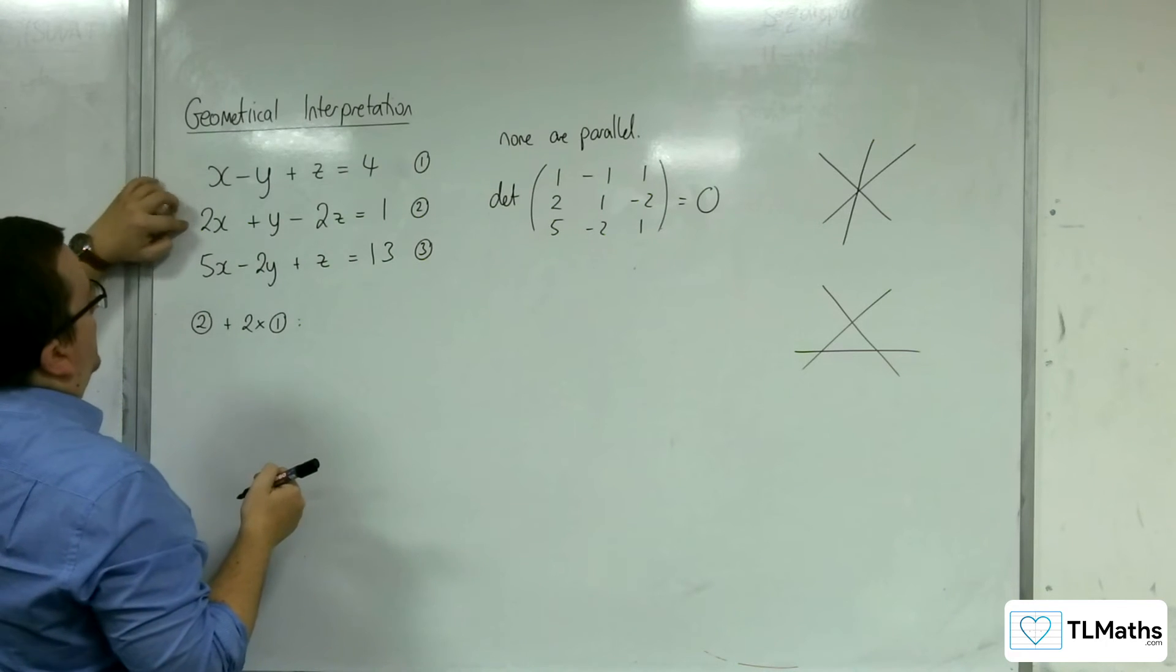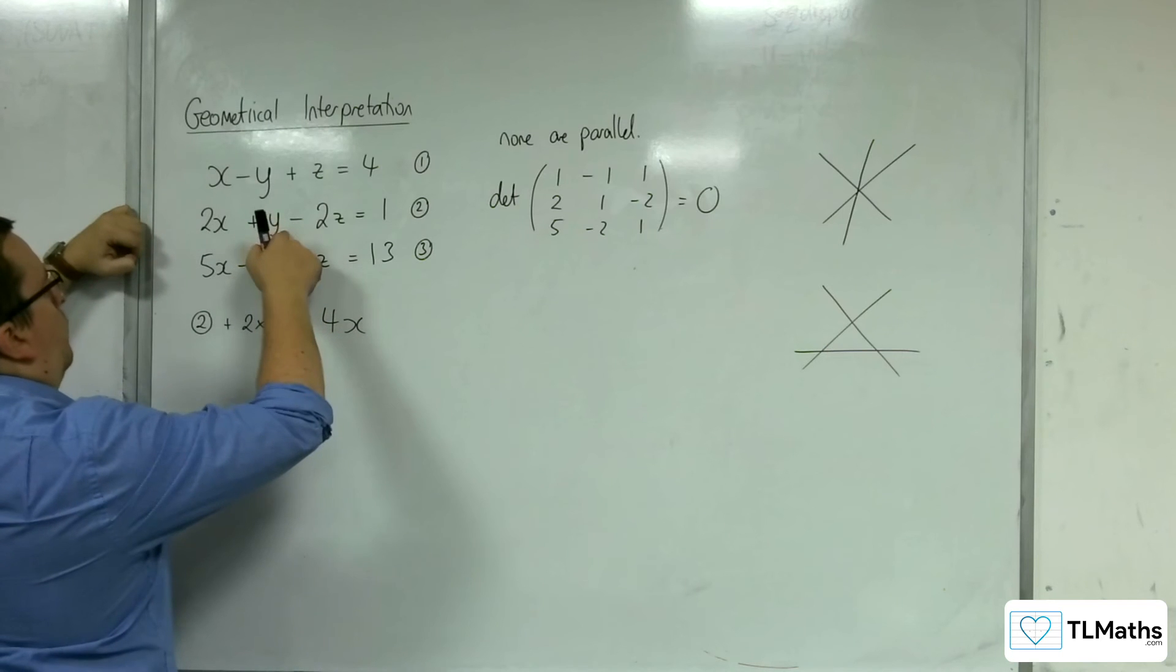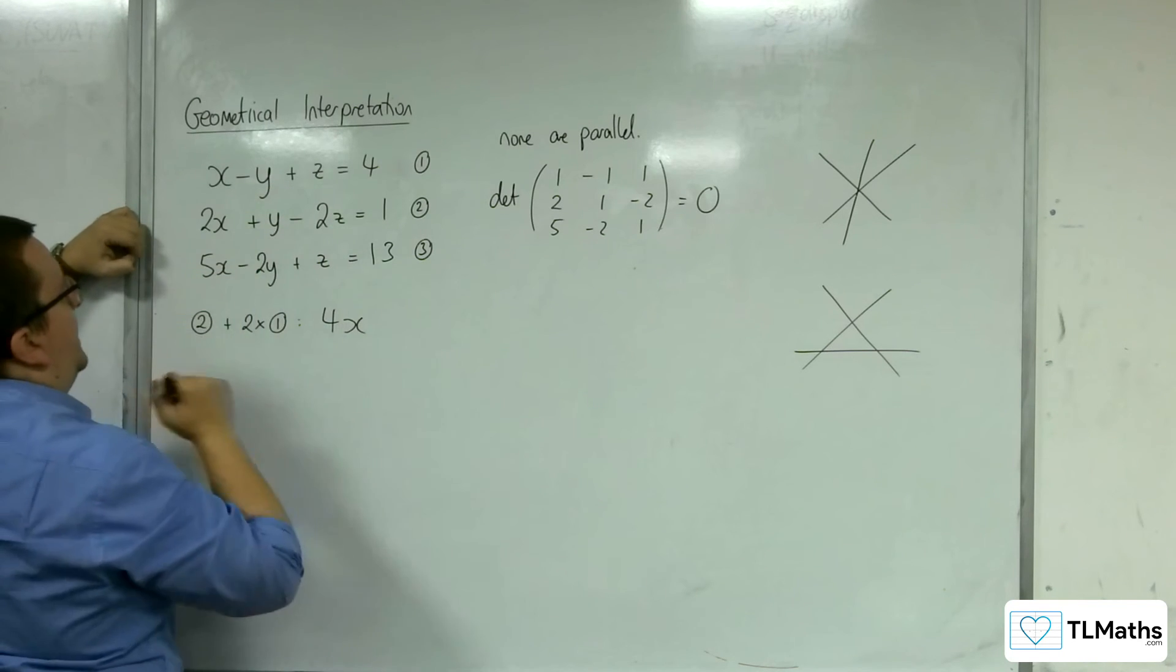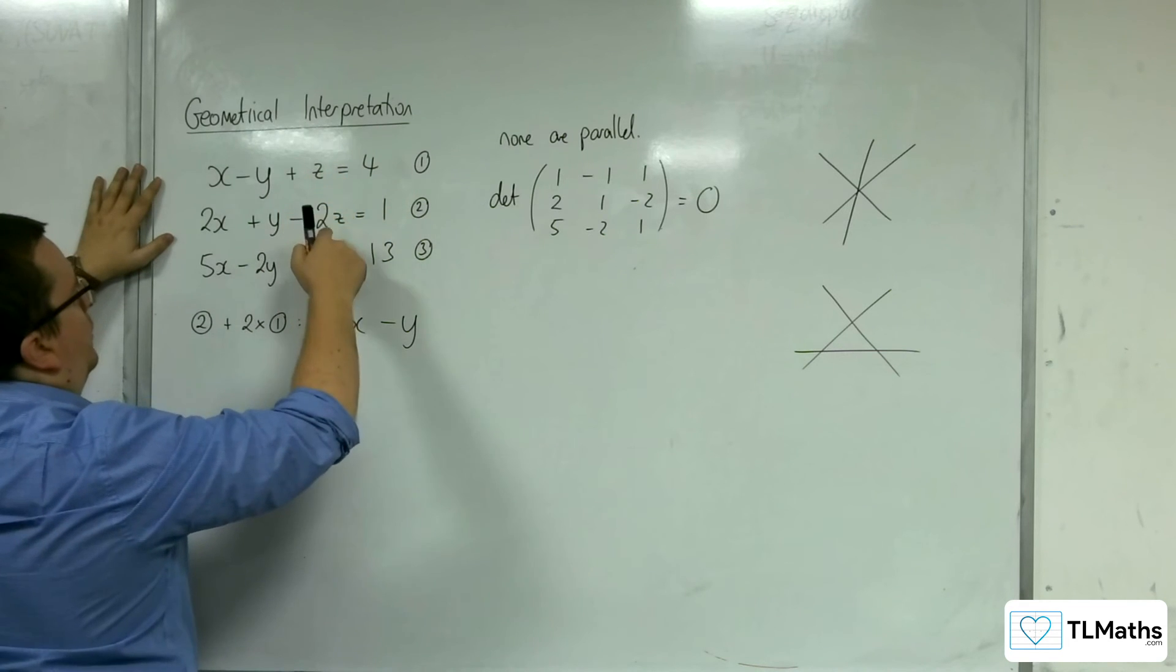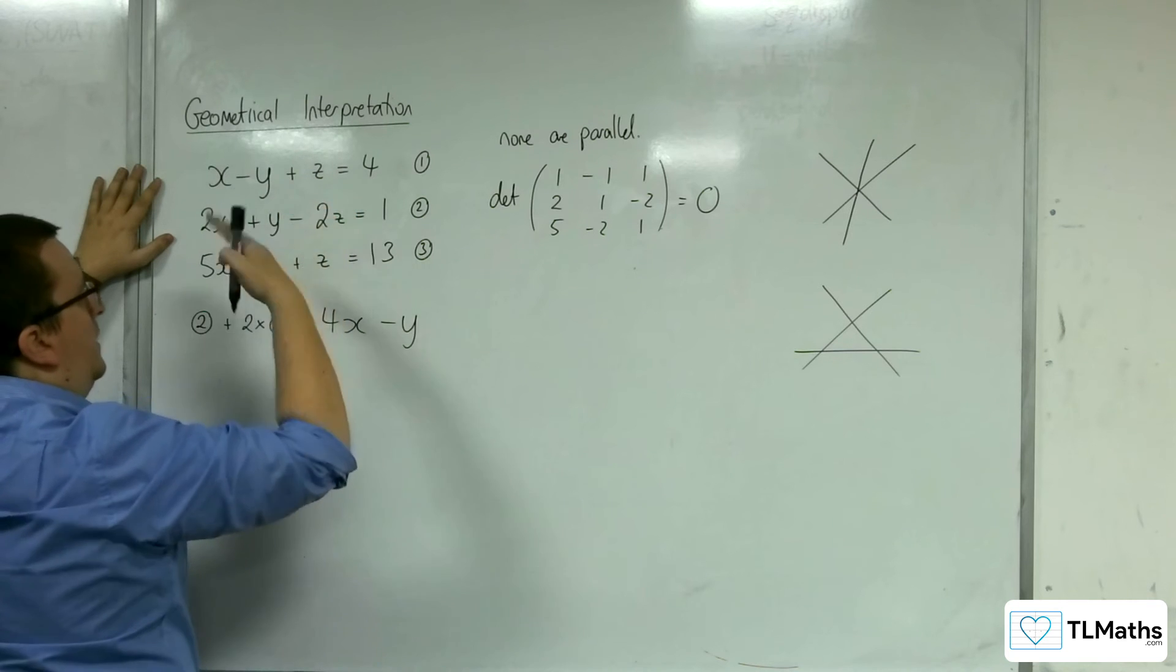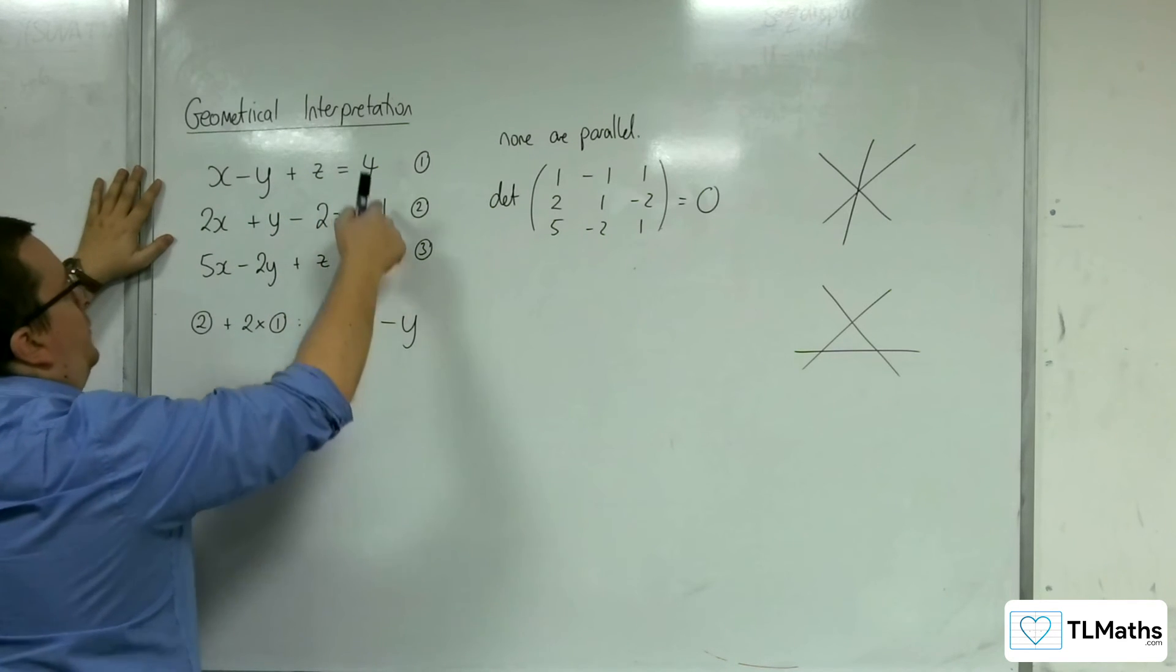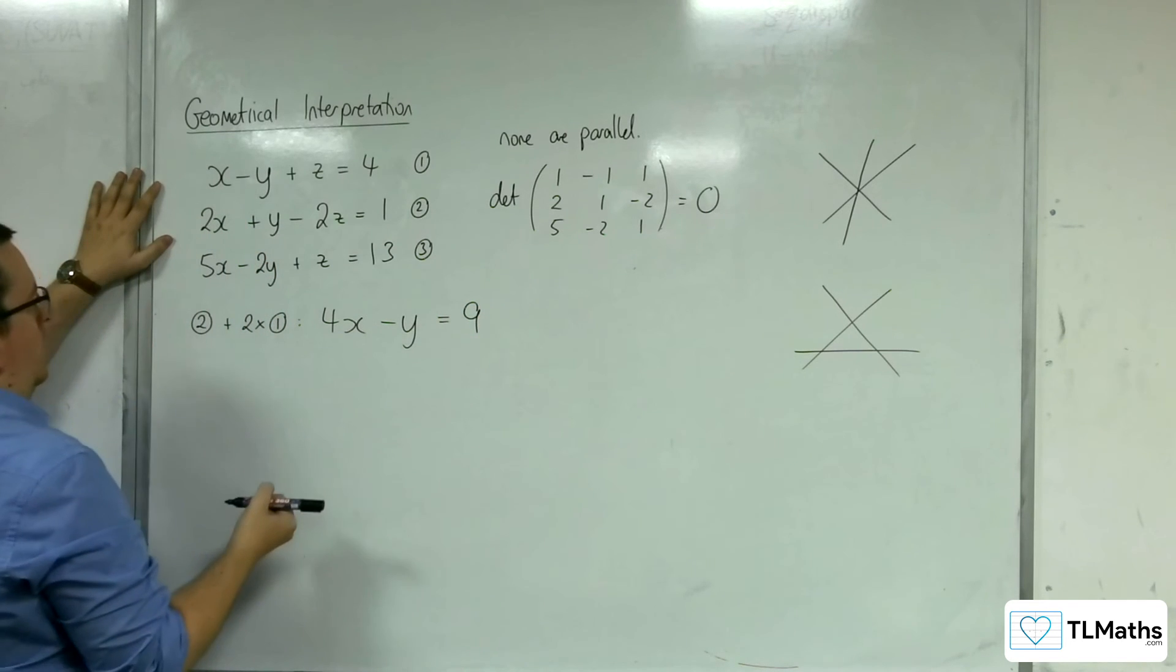So we've got two x plus two lots of x, so four x. And we've got y plus two lots of negative y, so minus y. Then we've got minus two z plus two lots of z, they're gone. One plus two lots of four is nine.